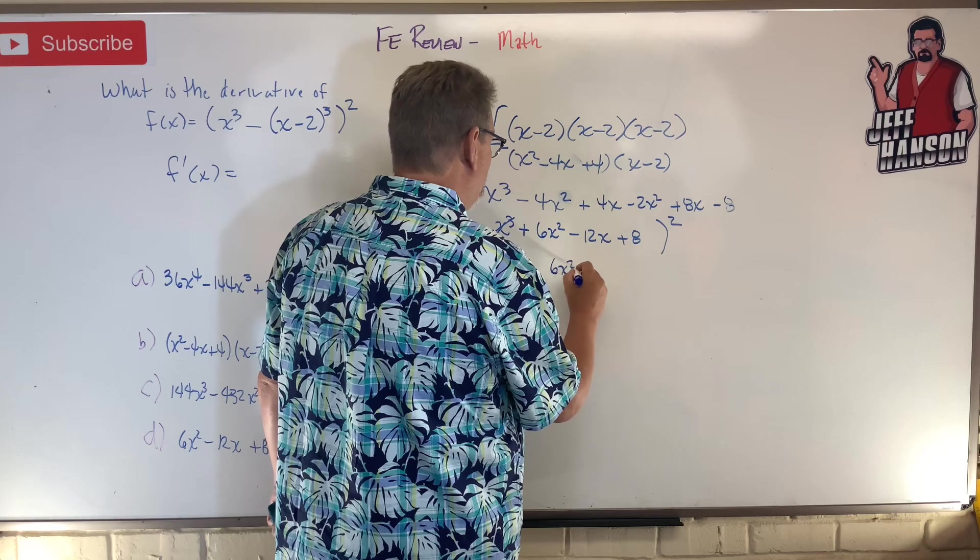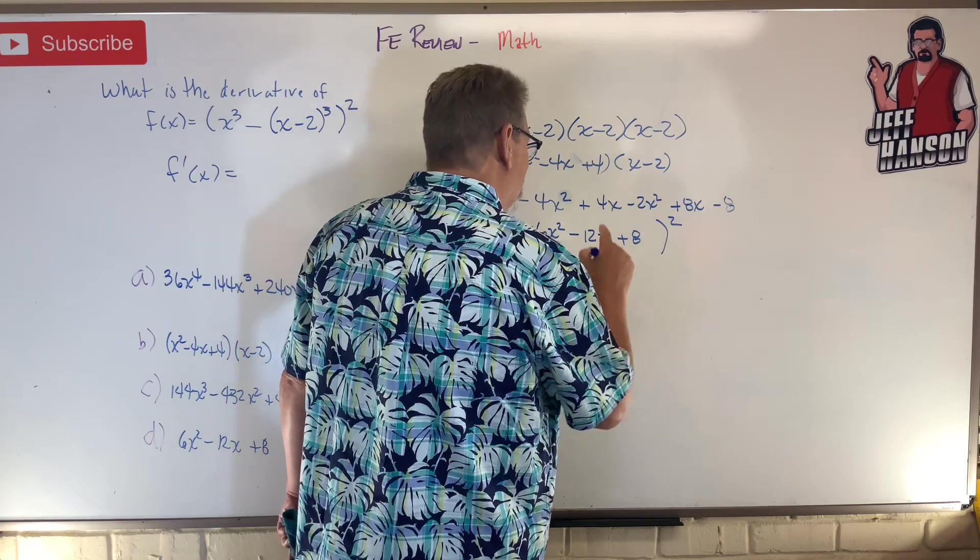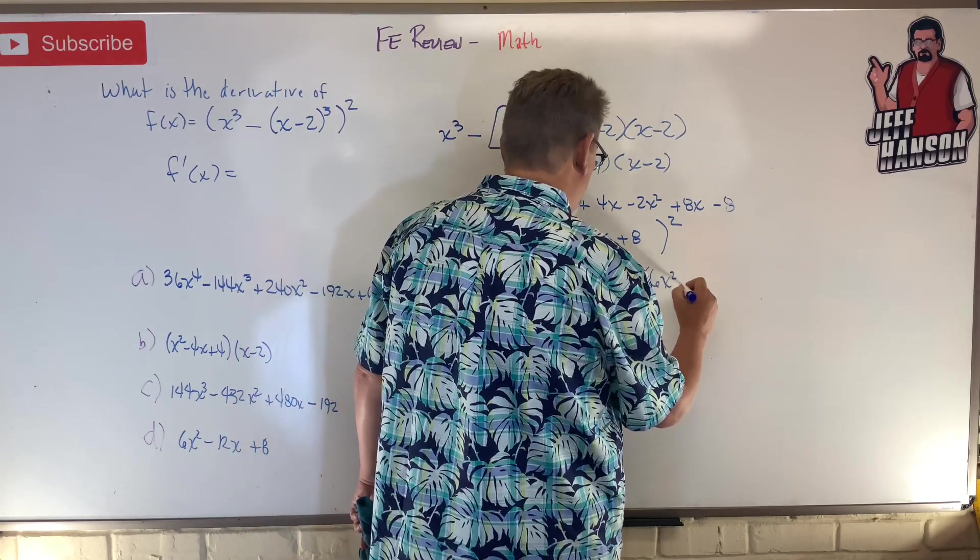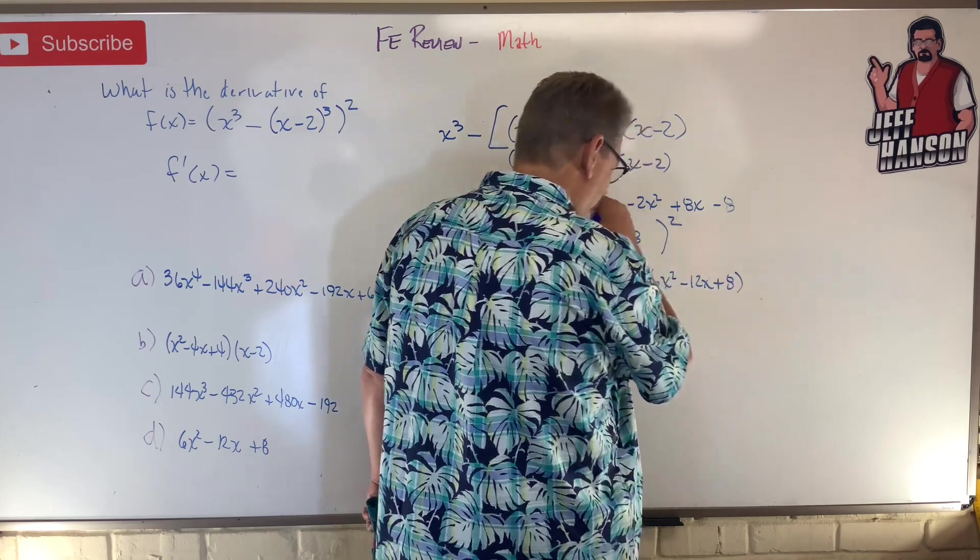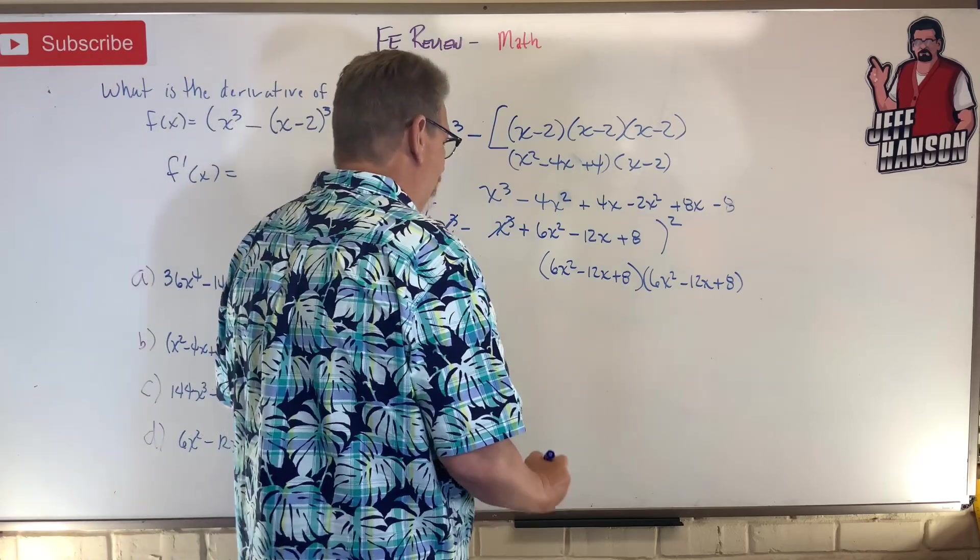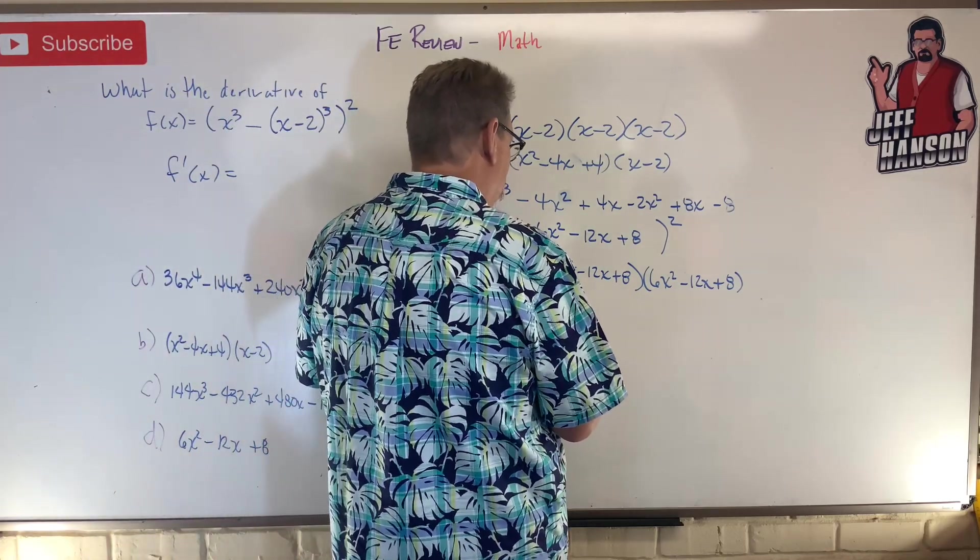I'll have 6x² - 12x + 8, and that is squared, so times (6x² - 12x + 8). Now I've got to expand that thing. This is some nasty algebra y'all.